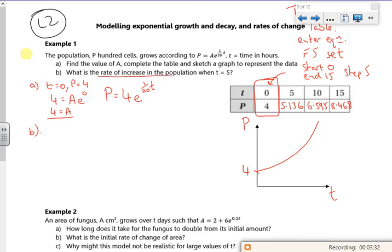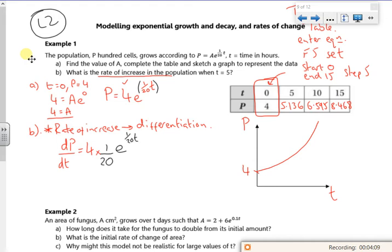What is the rate of increase? Oh, right. Okay. So just remember, rate of increase is differentiation. So I want dP/dt. 4 is just a number, so that stays there. And if you remember, with differentiating e, you differentiate the power, so that's 1/20, and then you just multiply it by the original e^(1/20t). So my dP/dt will be 4/20, so 1/5, times e^(1/20t).